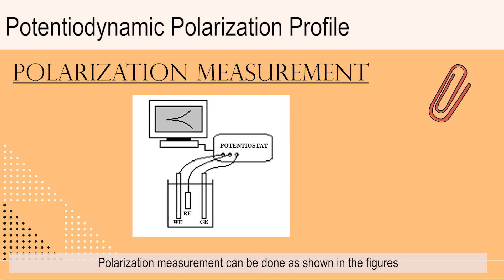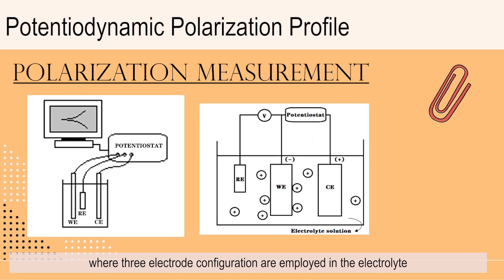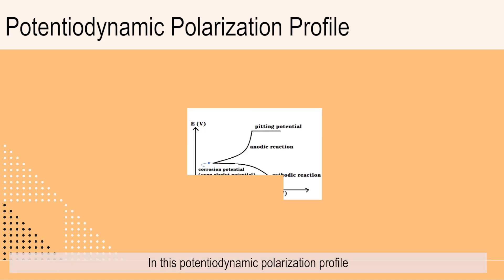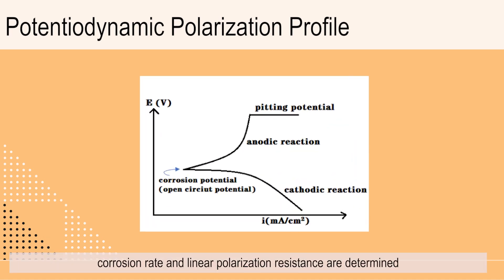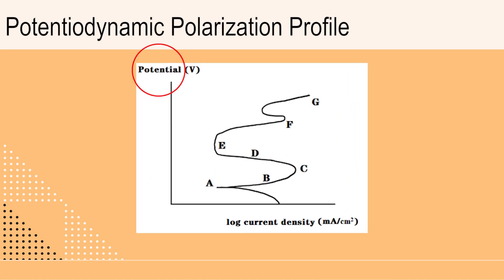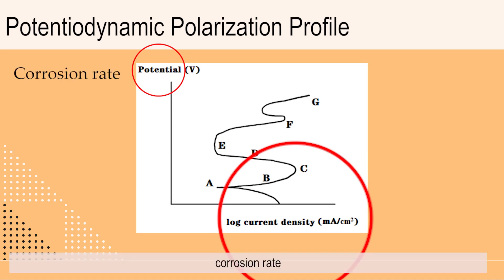Polarization measurement can be done as shown in the figures where three electrode configuration are employed in the electrolyte. In this potentiodynamic polarization profile, corrosion rate and linear polarization resistance are determined. It also shows the relationship between the potential and log of current density, which is also referred to as corrosion rate.